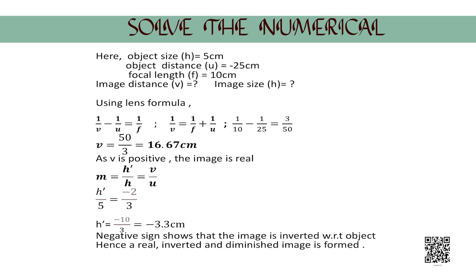Now, according to the magnification formula, m equals h'/h equals v/u. Substituting the values of h, v and u, we have h'/5 equals minus 2/3. The size of the image is h' equals minus 10/3 equals minus 3.3 cm. The negative sign shows that the image is inverted with respect to the object. Hence, a real, inverted and diminished image is formed.